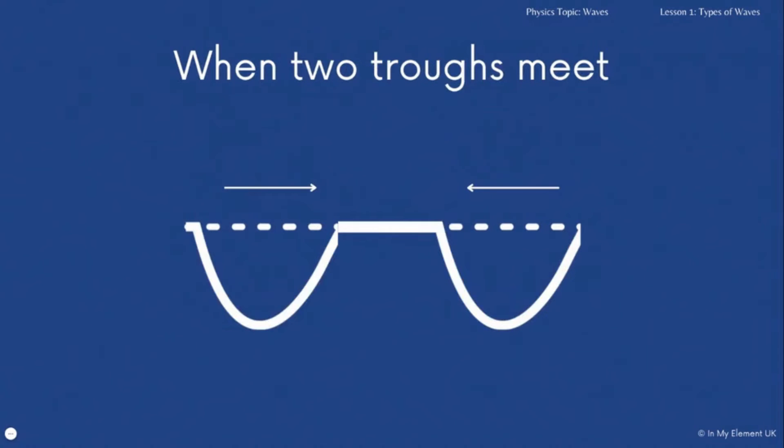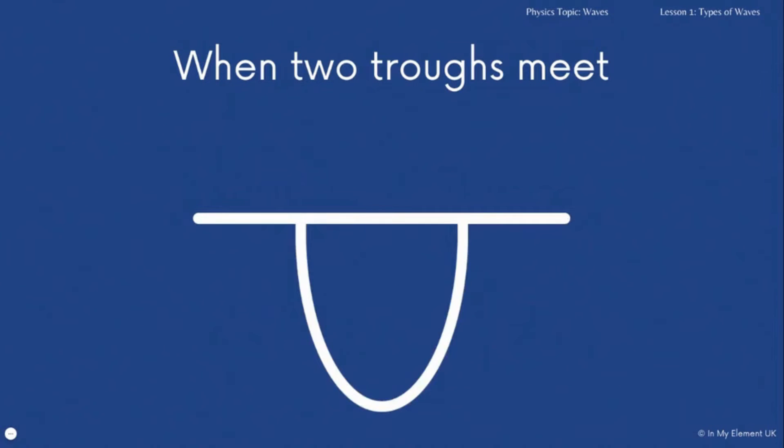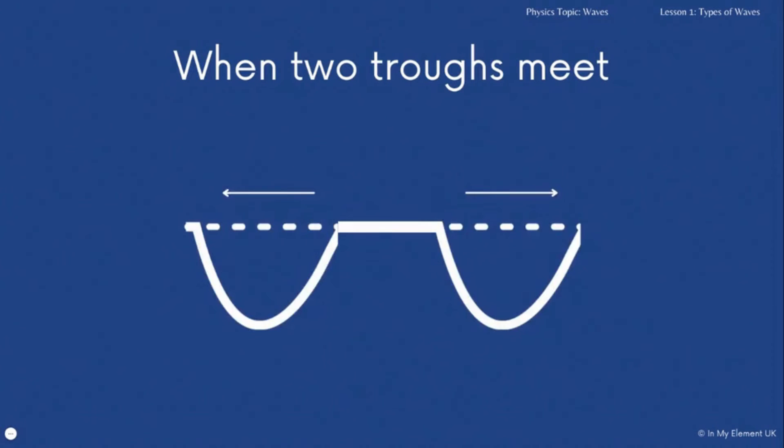When two identical troughs meet, so the depth of both waves are the same, you add those depths together and what you will get is a giant trough of a wave. Then after they have met, they go in their opposite directions and they reduce in their height and they reduce in their depth again.